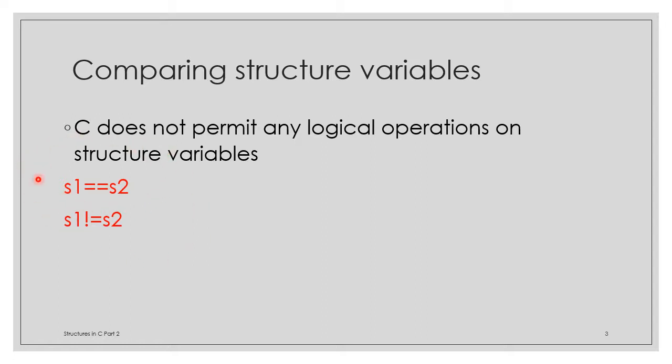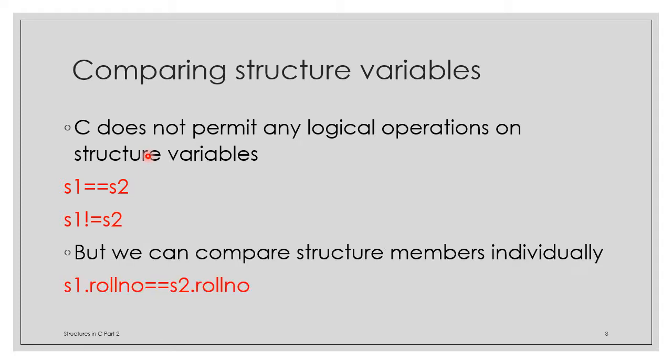C does not support this comparison directly on structures. But you can perform this comparison on the members. For example, the member roll number in S1 and roll number in S2. S1.rollnumber equal to S2.rollnumber - this comparison is possible. But structure variables directly cannot be compared. Instead structure members can be used for comparison.